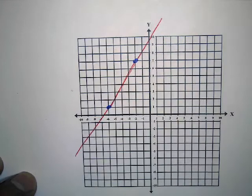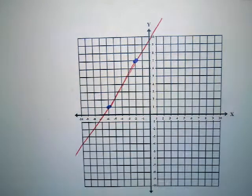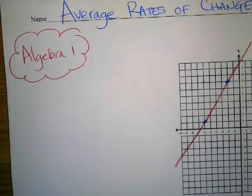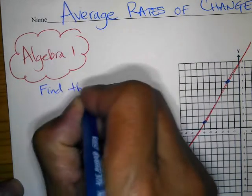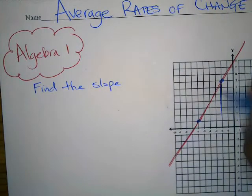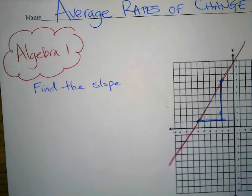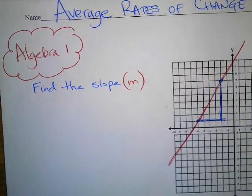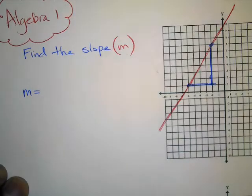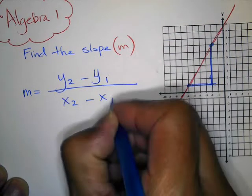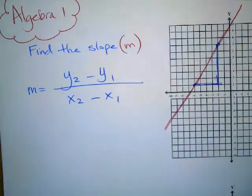Back then you were focusing on graphing lines — just linear equations. And you would try to determine the slope of the line. Remember the slope? Rise over run. But if you didn't have a graph, there was a formula. Slope was represented by the letter M, and the formula is M equals Y2 minus Y1 over X2 minus X1.